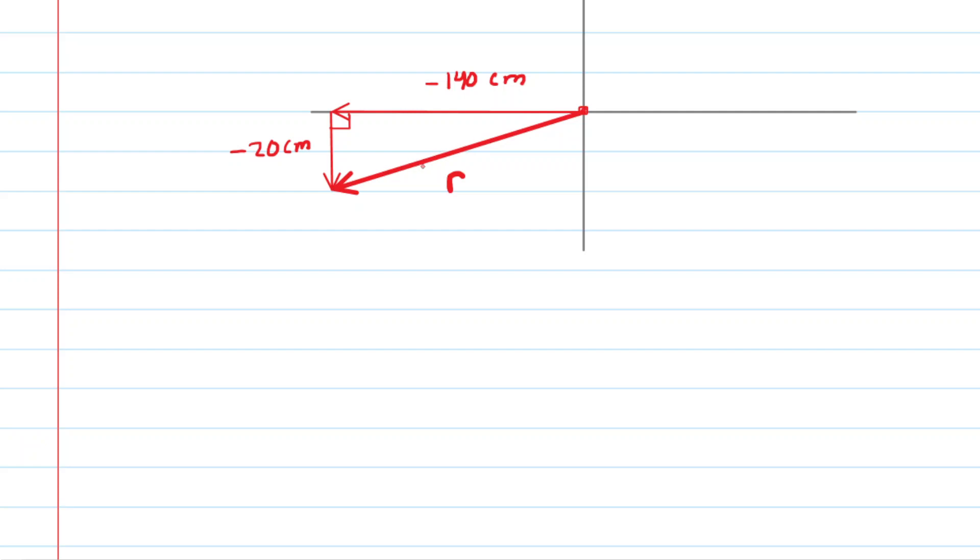It is the hypotenuse of this right triangle. So we can use the Pythagorean theorem. We can say that the hypotenuse squared, so R squared, is equal to negative 140 squared plus negative 20 squared. If you simplify the right side, you should get 20,000. And then take the square root of both sides, and you will see that the magnitude of the resultant vector is about 141 centimeters. That's the correct answer to part C.